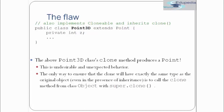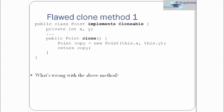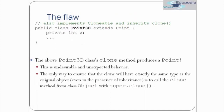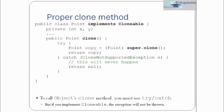The only way to ensure that clone will have exactly the same type as the original object is to call the clone method from the object class using super.clone(). Whatever object is actually calling it, the method should return that object's clone. We should not hard code it to return Point; rather we should make it flexible to return the clone of whichever object is calling it. So instead of writing our own definition, just call super.clone() from within the clone method.